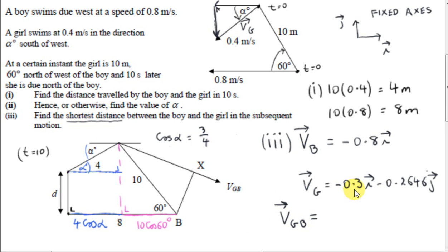So we know that's given by VG minus VB. If we subtract the i components, we have minus 0.3 minus minus 0.8. That's plus 0.5. And then we subtract the j components. So we take this component here, minus 0.2646j, and subtract 0. That'll just give us minus 0.2646j.